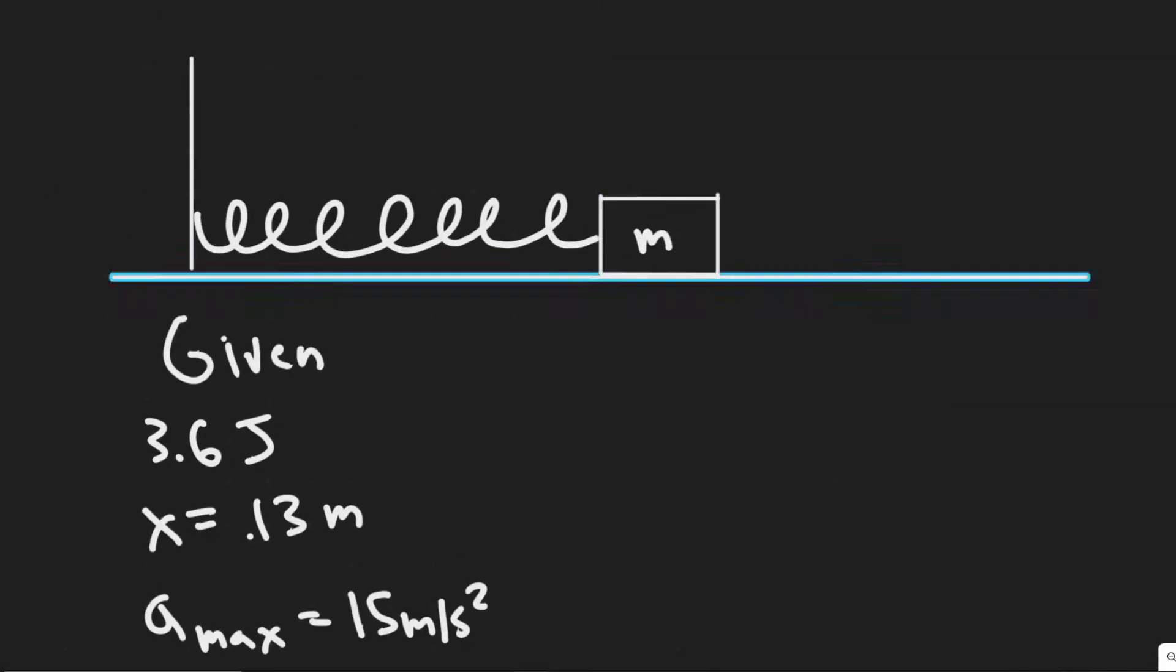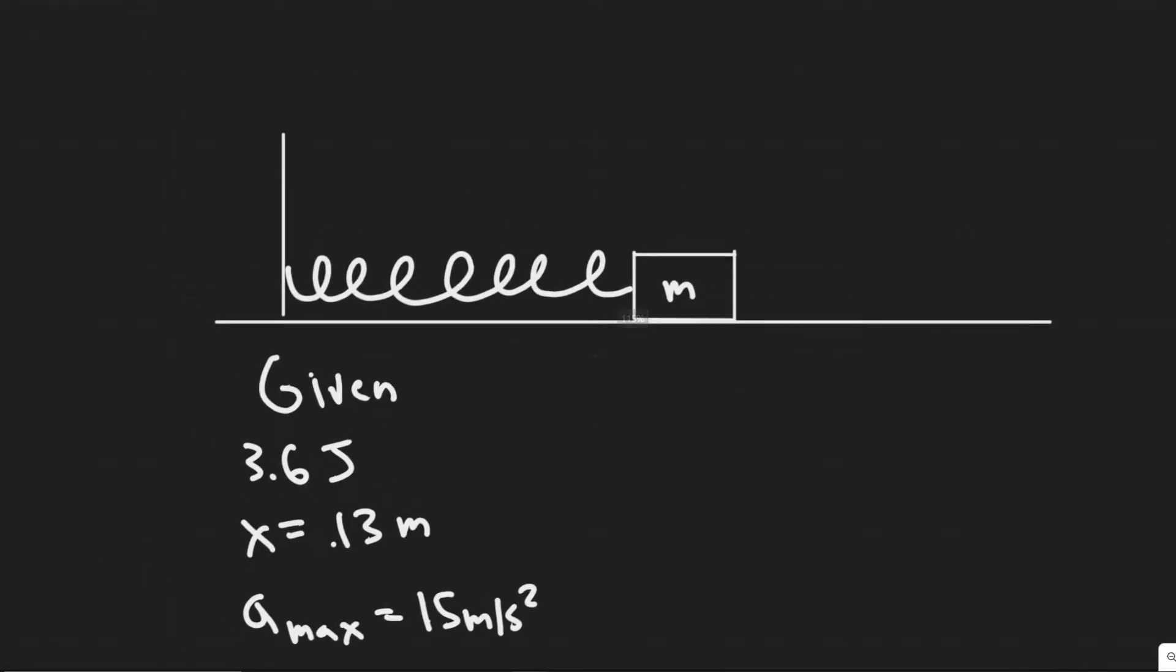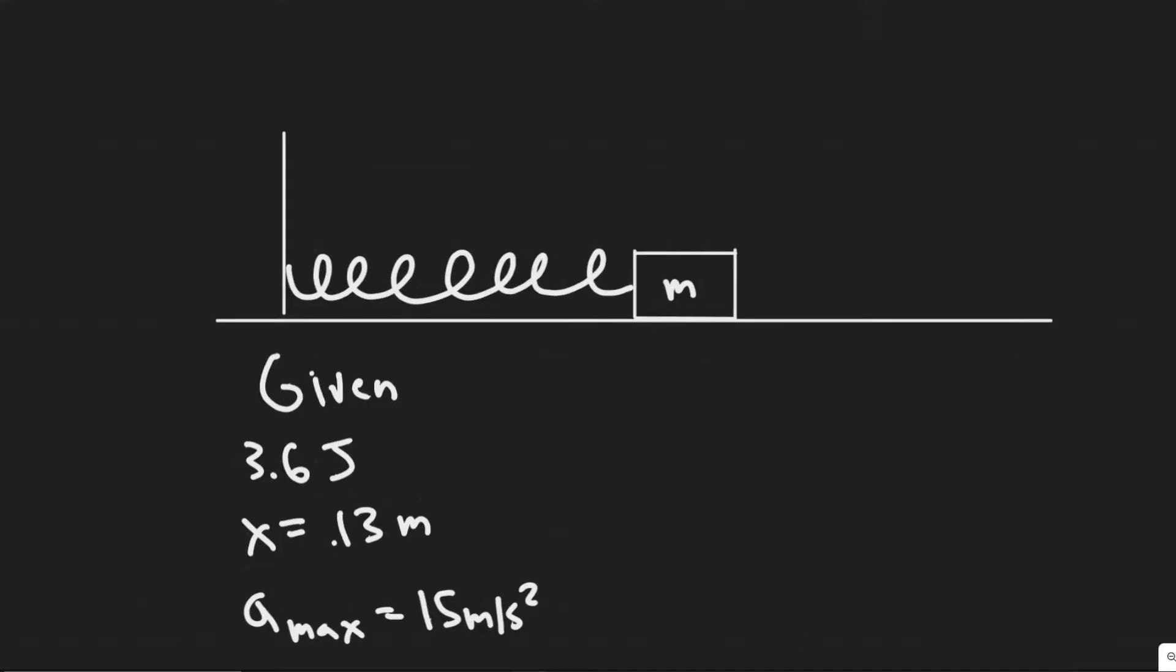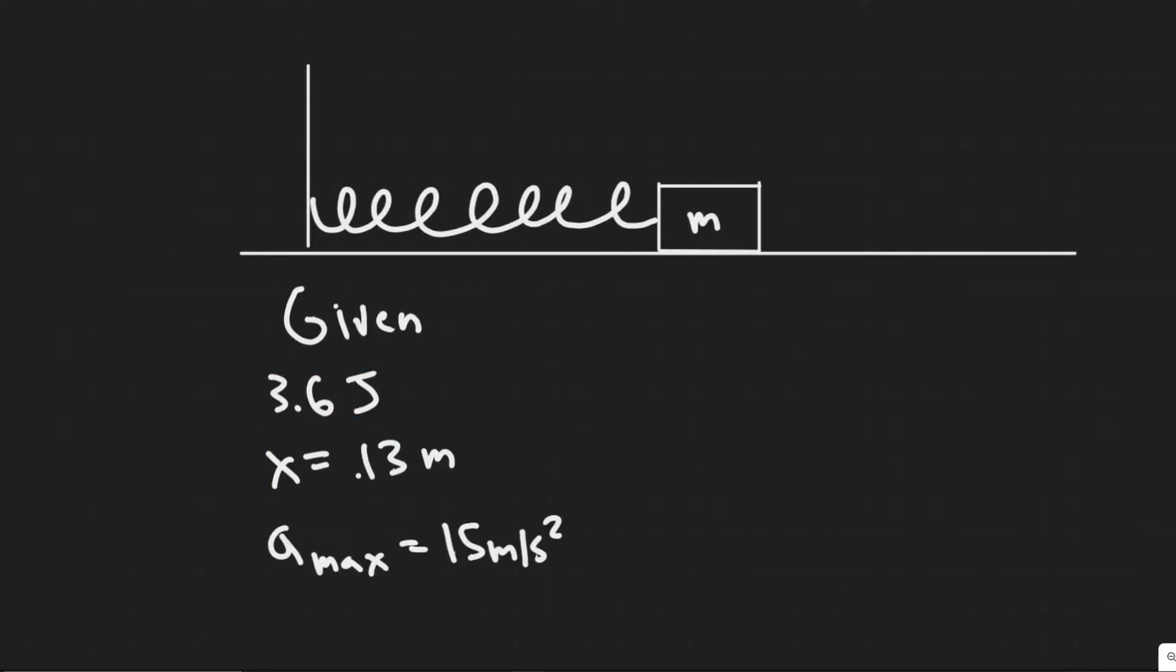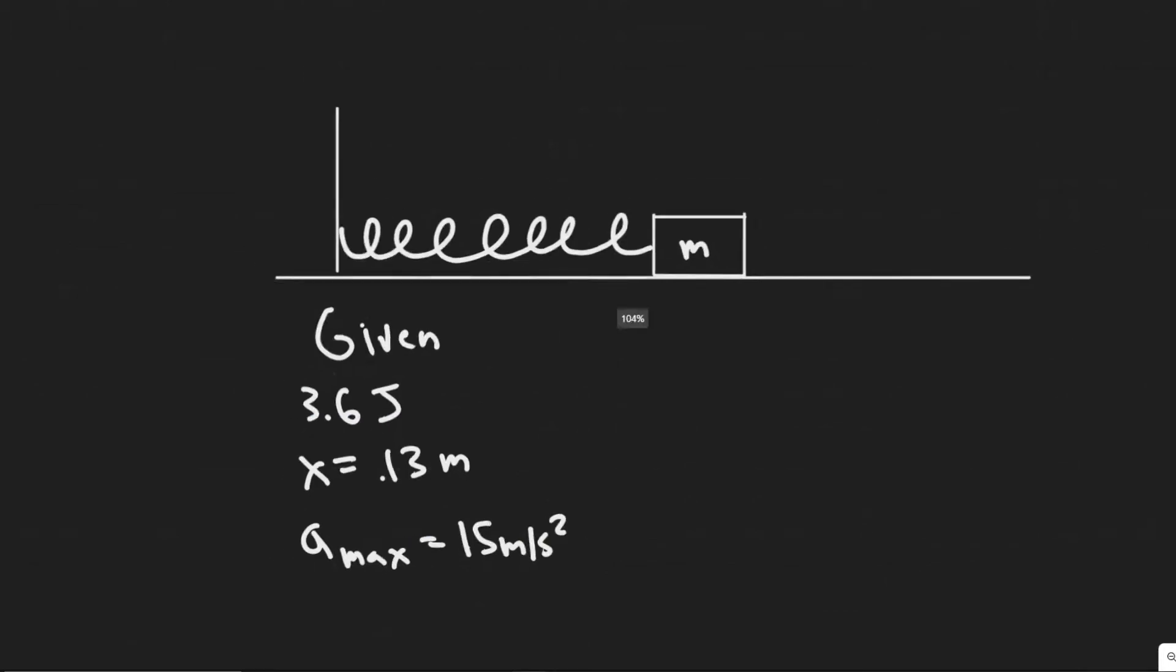The first thing you always want to do is write down your given and draw what's going on. So we have this mass here connected to this spring, which is against this vertical wall, and we know it's horizontal. We're given the amount of work it takes, 3.6 joules, to compress a distance of 0.13 meters.